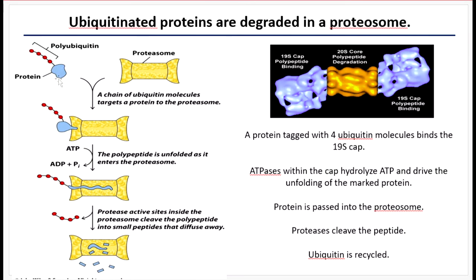Here's a protein tagged with four ubiquitin molecules, and here's the proteasome — another organelle within the cell with lots of these little proteasomes existing in a single cell. The tagged protein will bind to one of the caps of the proteasome. ATPases within the cap will use a molecule of ATP, releasing enough energy to drive the unfolding of the protein. In order to access all the peptide bonds, the protein needs to be unfolded to its primary structure, which is ATP-dependent. As the protein enters the proteasome, it's unfolded into its primary structure, exposing all peptide bonds. Proteases within the proteasome then recognize and break those peptide bonds, releasing small peptides or amino acids.